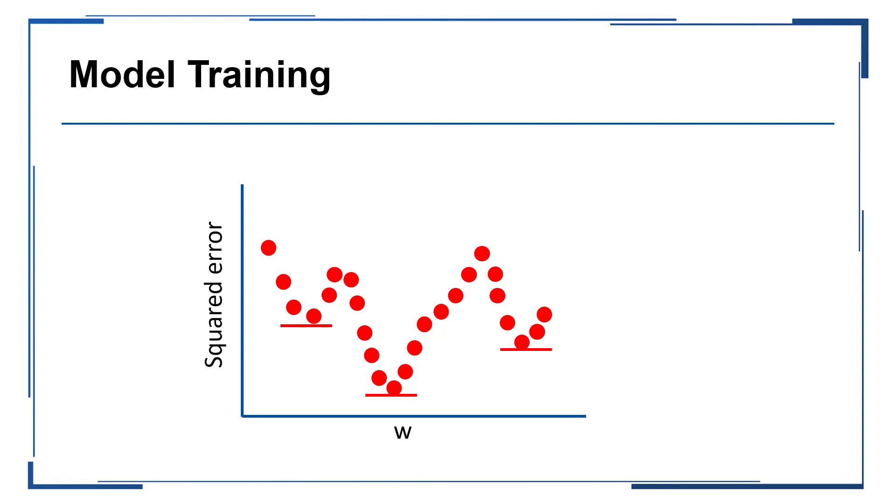While we could perform a full grid search trying every possible value of all of these weights, some neural networks might have millions or even billions of weights that are being learned. And that really just makes a grid search often computationally infeasible.